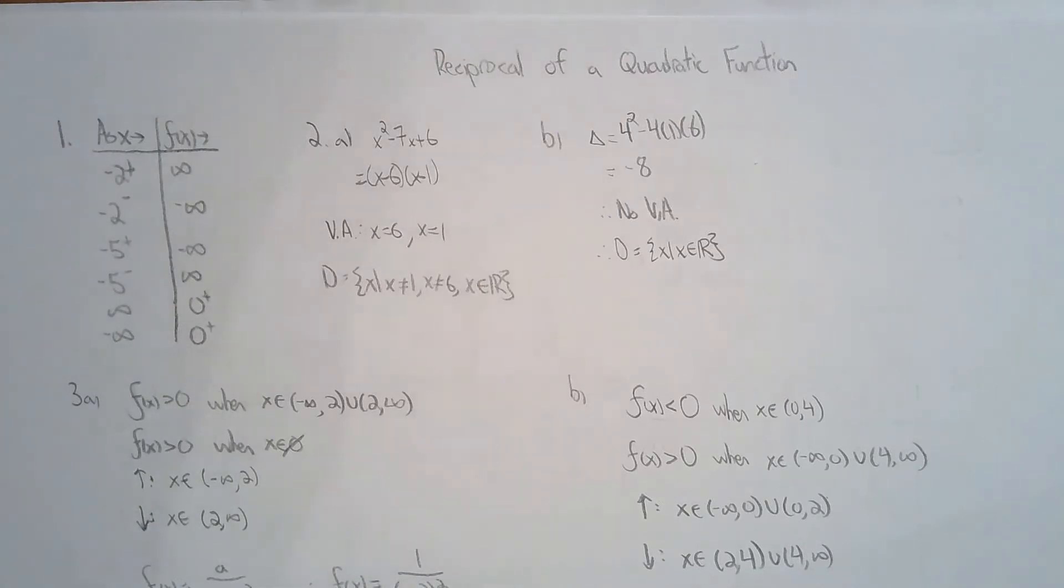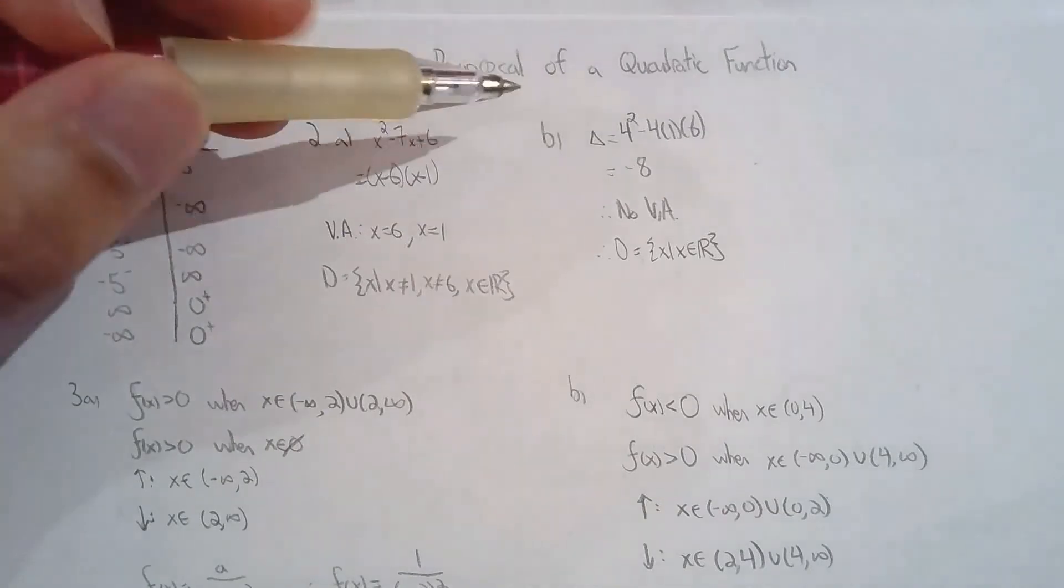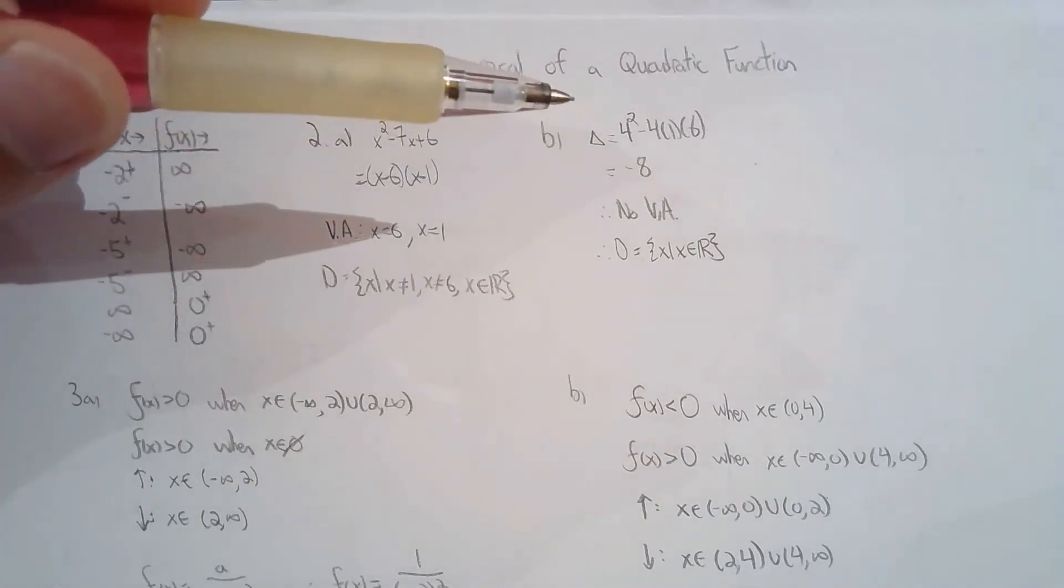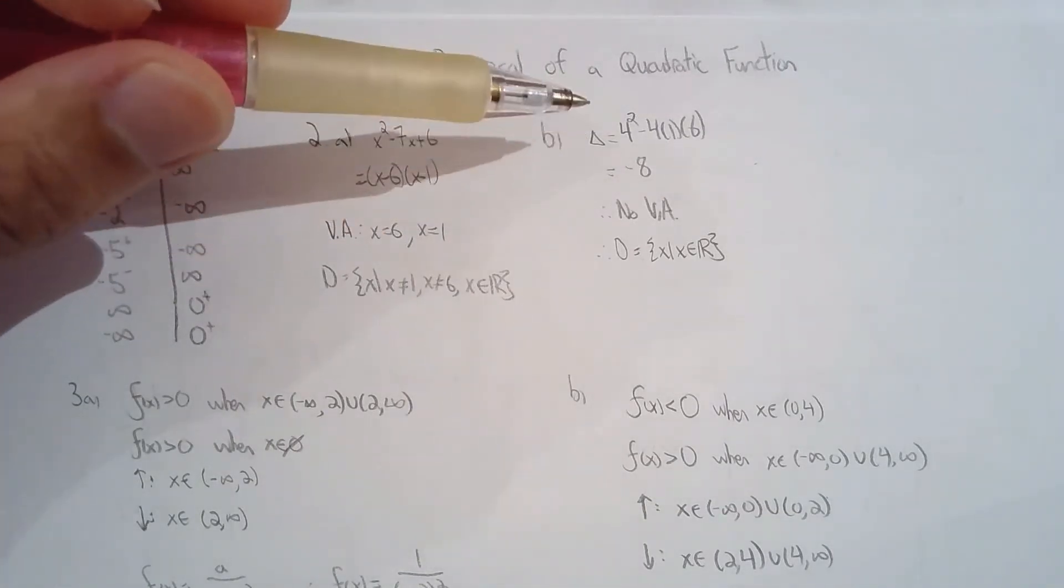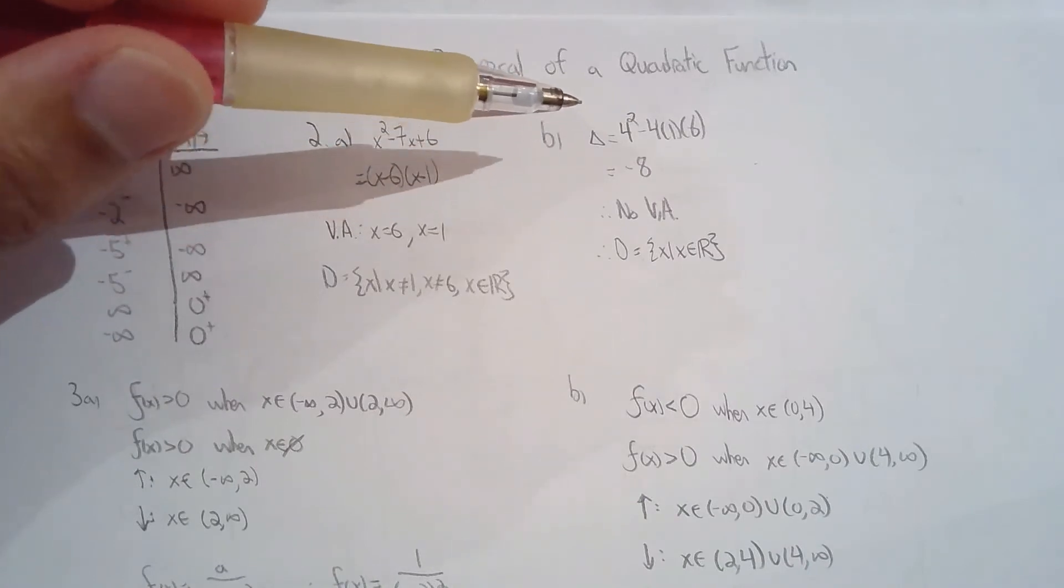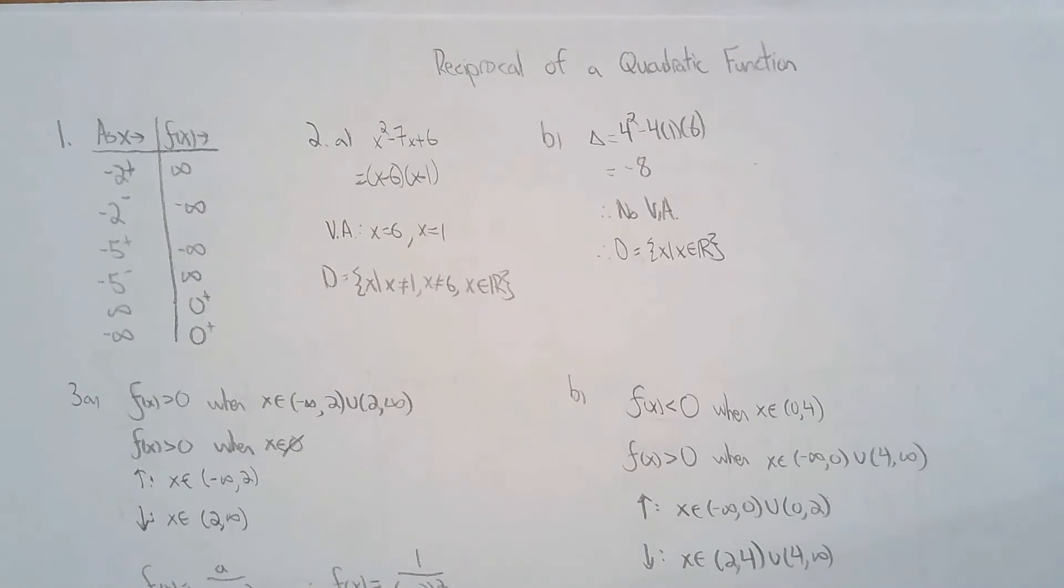For question two, they ask us for the vertical asymptotes, so I have to factor the denominator to find the zeros for the polynomial, the denominator, and then they ask me to state the domain. So once I have the vertical asymptotes, it's pretty easy to state the domain. B was actually, there were no vertical asymptotes because the quadratic had no real zeros.